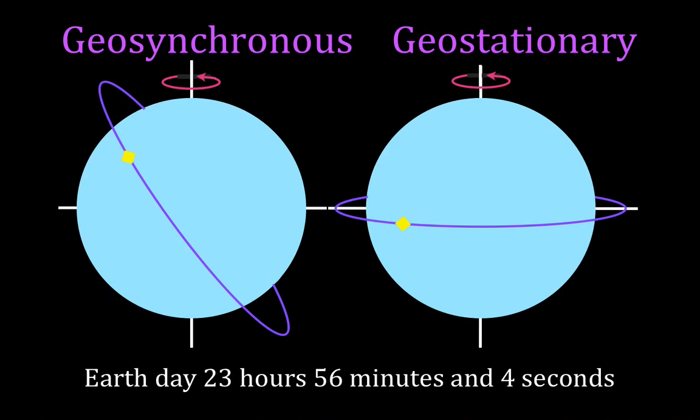Here is the quick introduction. Geosynchronous means that it is synchronized to the Earth — geo meaning Earth, synchronized to the Earth. What is synchronized is the orbital period of the satellite and the rotational period of the Earth. The orbital period of the satellite is equal to the rotational period of the Earth. That period is 23 hours, 56 minutes, and 4 seconds.